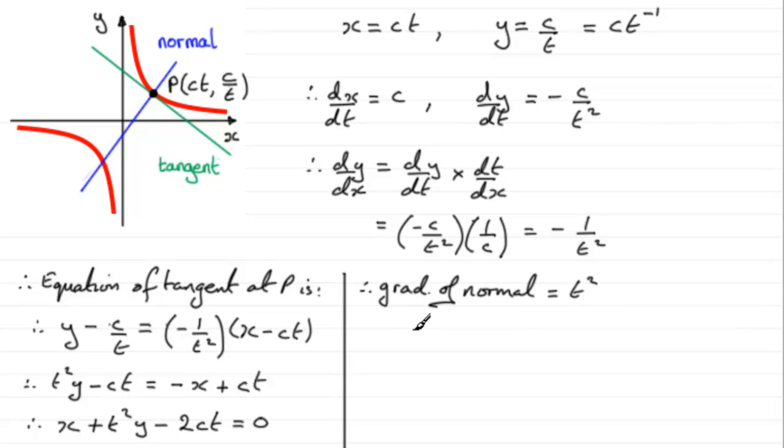So when it comes to working out the equation of the normal, the equation of the normal, what's that going to be? Well, again, if we use y minus y1 equals m bracket x minus x1, we're going to have y minus y1, that's c over t, equals m, the gradient, which is t squared, multiplied by x minus x1, x minus ct.